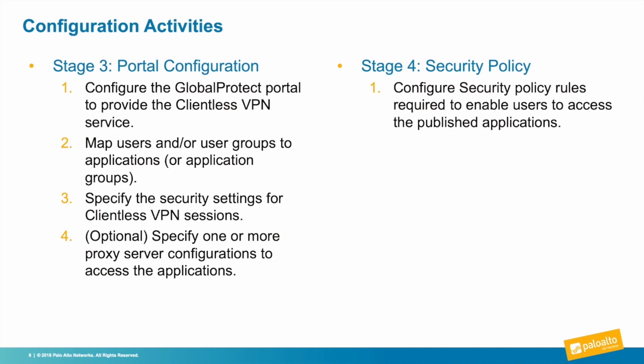The third stage is portal configuration, where we configure the GP portal to provide the clientless VPN service, map users to applications, specify security settings for the clientless VPN session, and if there is a proxy server between the firewall and the application server, specify its settings. The fourth and final stage is security policy configuration, which enables portal users to access required resources internally or over the internet. Without security policies, portal users will not be able to access any resources even if successfully connected.